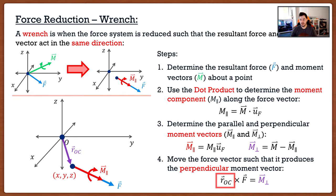The key distinction from the previous section: before, we wanted to get rid of the entire moment, so we used M as a whole. In a wrench, we only want to get rid of the perpendicular component — so in the equation, we only use the perpendicular component, not the whole moment. We then use the same procedure as before to solve for that unknown coordinate point. A wrench, honestly, is a tough calculation — no one wants to do it. If you want to avoid it, just be nice to your professors.